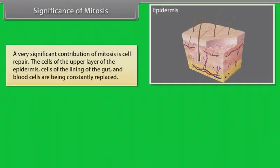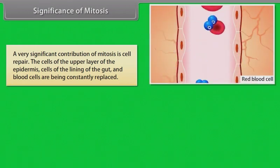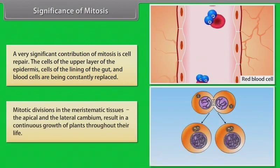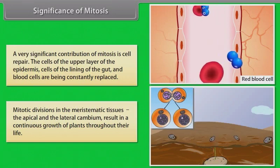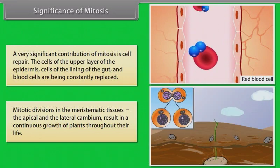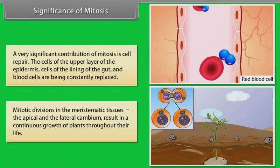A very significant contribution of mitosis is cell repair. The cells of the upper layer of the epidermis, cells of the lining of the gut, and blood cells are being constantly replaced. Mitotic divisions in the meristematic tissues, the apical and the lateral cambium, result in a continuous growth of plants throughout their life.